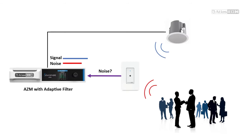Our new ANC system solves this issue by using an adaptive filter, a refined DSP algorithm capable of extracting signal and noise levels from the incoming sensor levels. Since this filter is built into our product, it's already calibrated and requires no tuning.